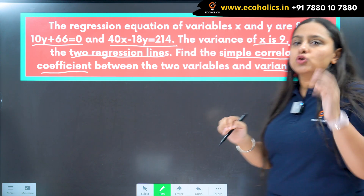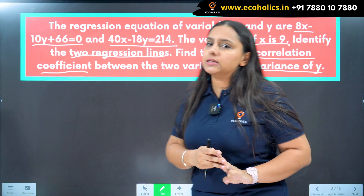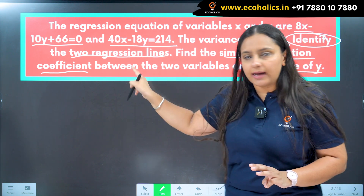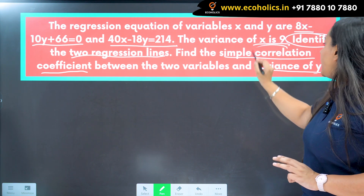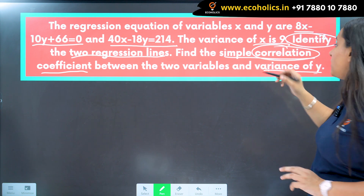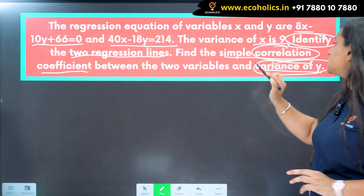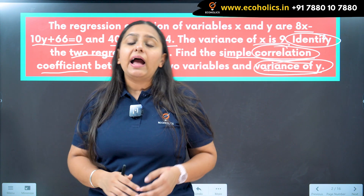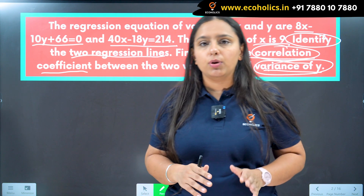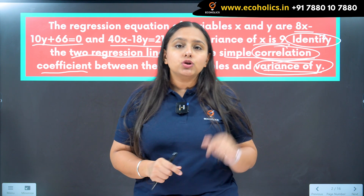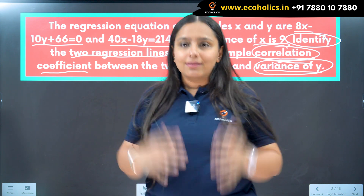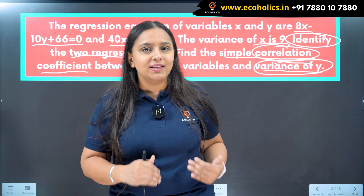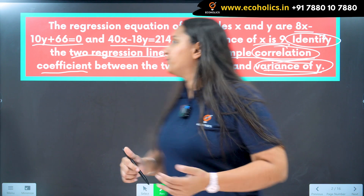You have to find out three things: first, identify the two regression lines; second, find the simple correlation coefficient; and third, find the variance of Y. These types of questions are very simple and have been asked numerous times. There is just one single technique — if you learn that technique you will be able to solve every question of this type.